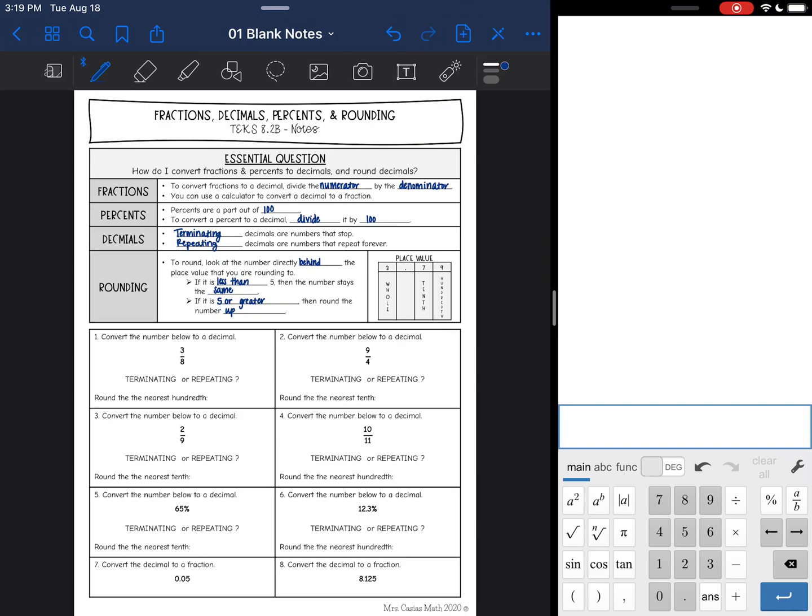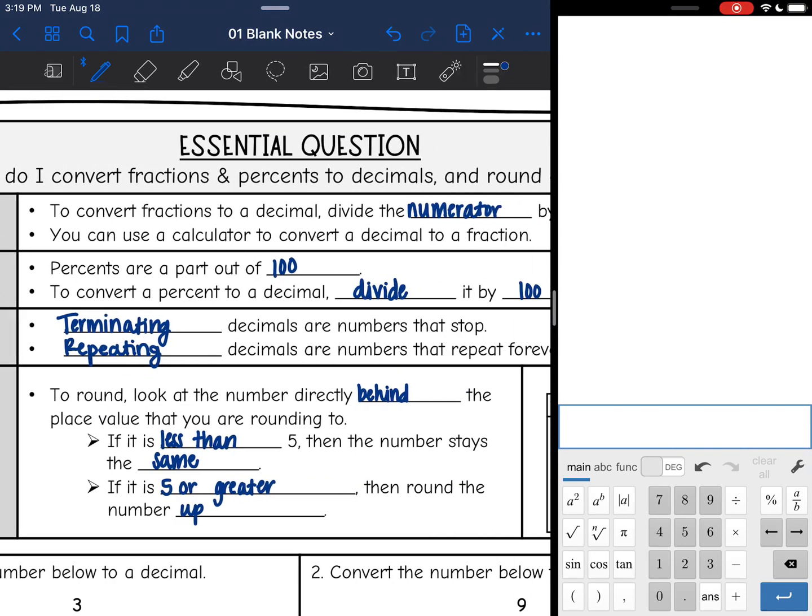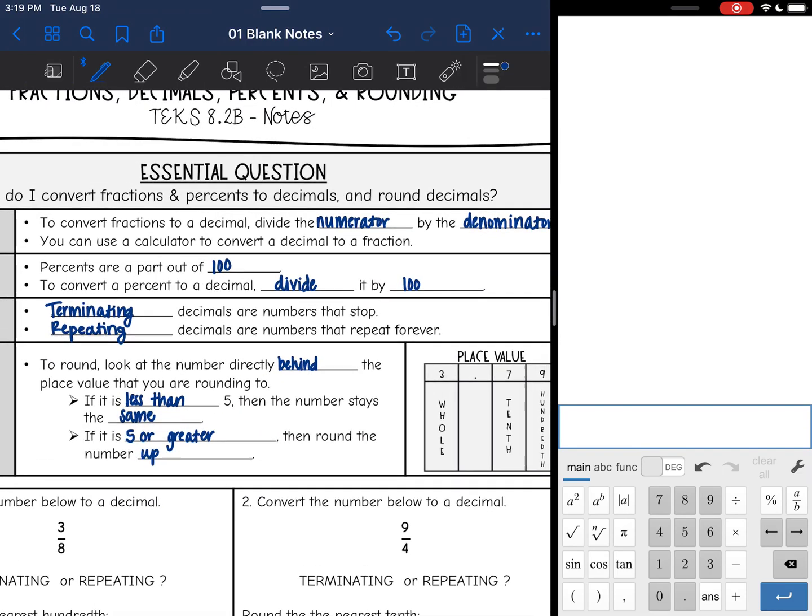So we're going to start out with some fractions first. Let's read about fractions. So to convert fractions to a decimal, you are going to divide the numerator by the denominator, basically the number on top divided by the number on the bottom.